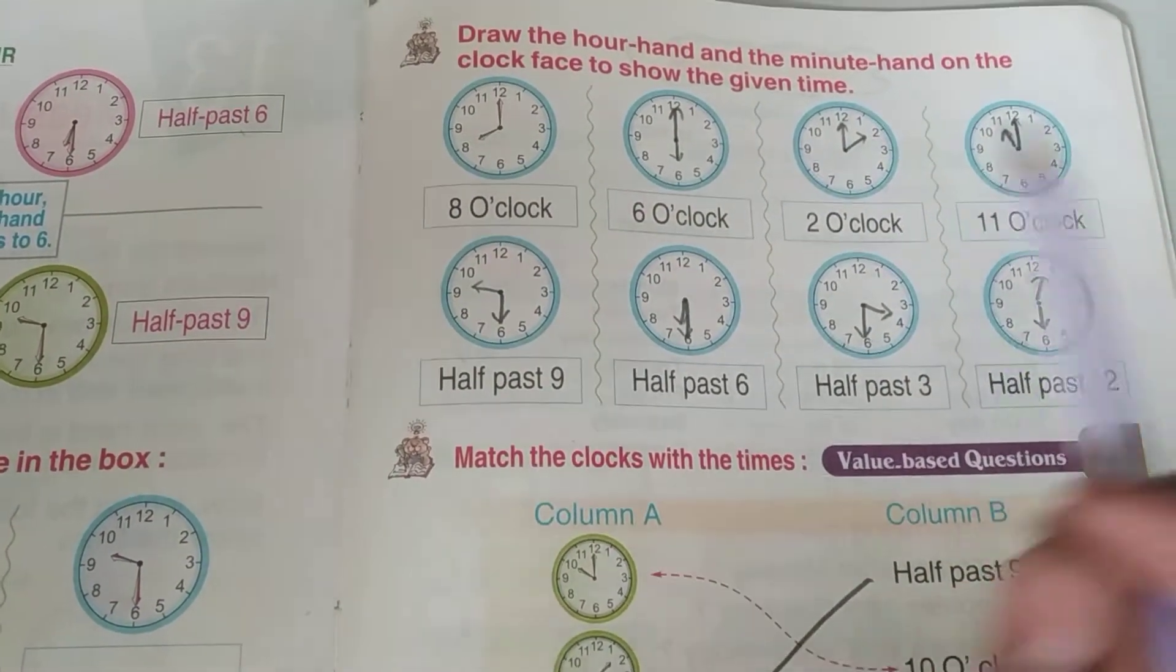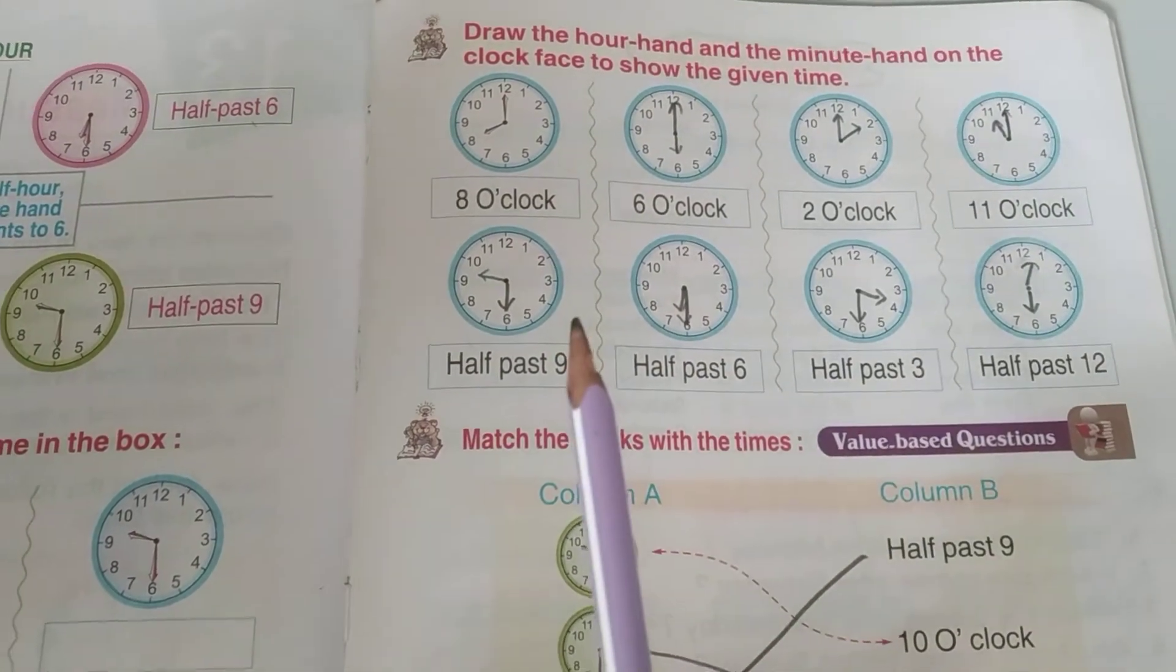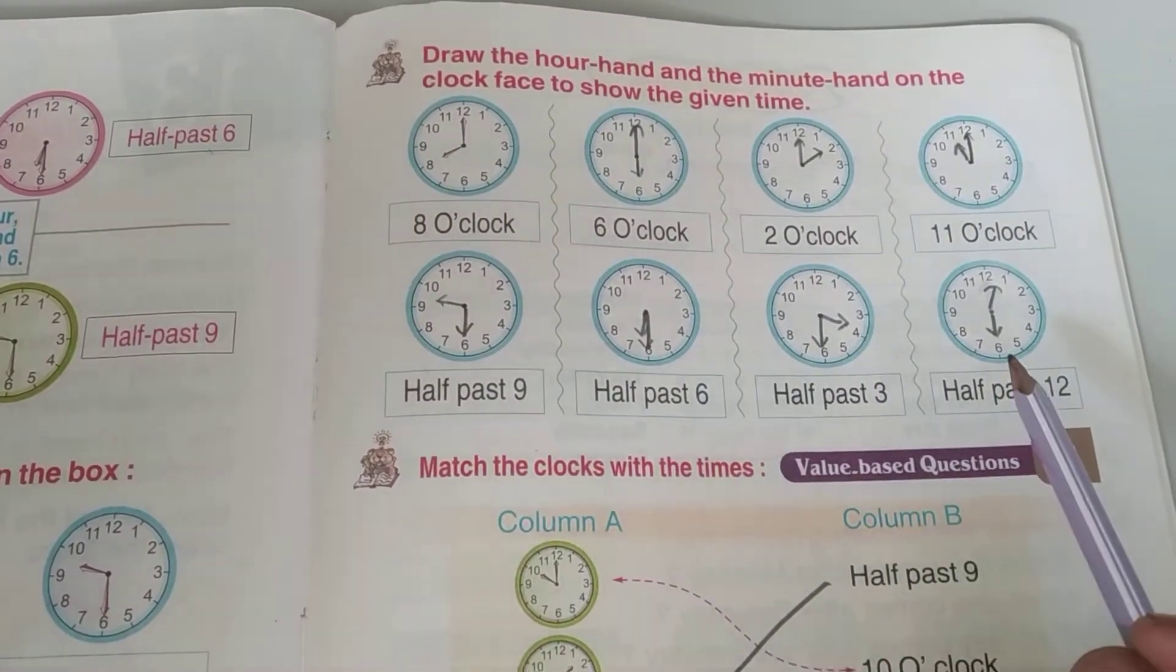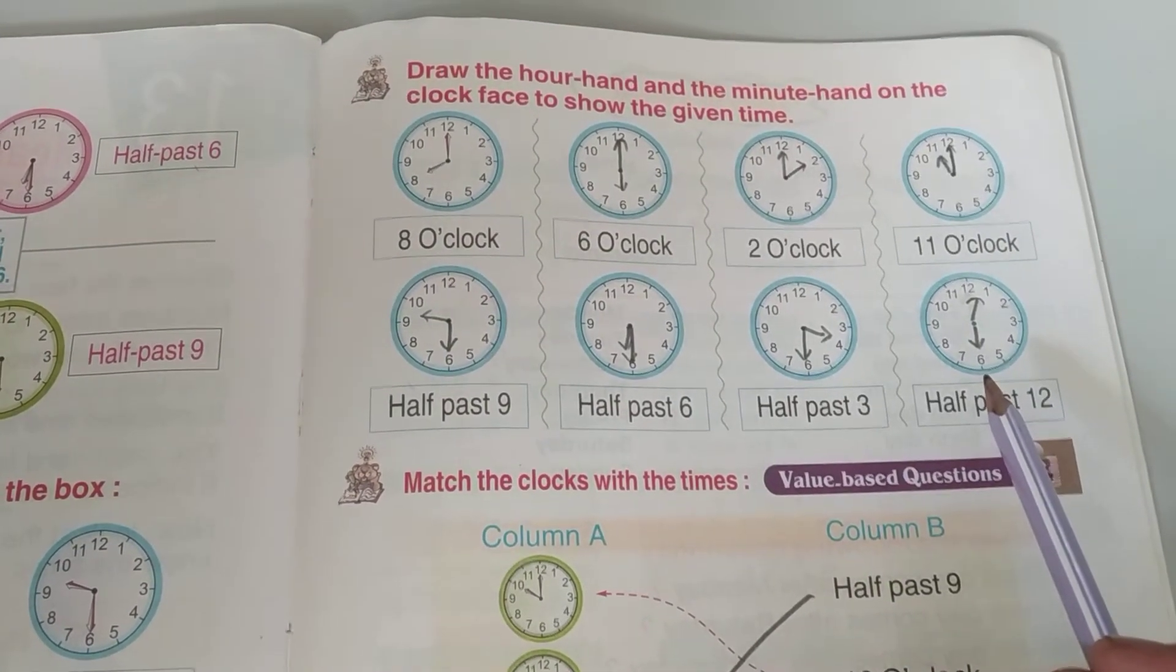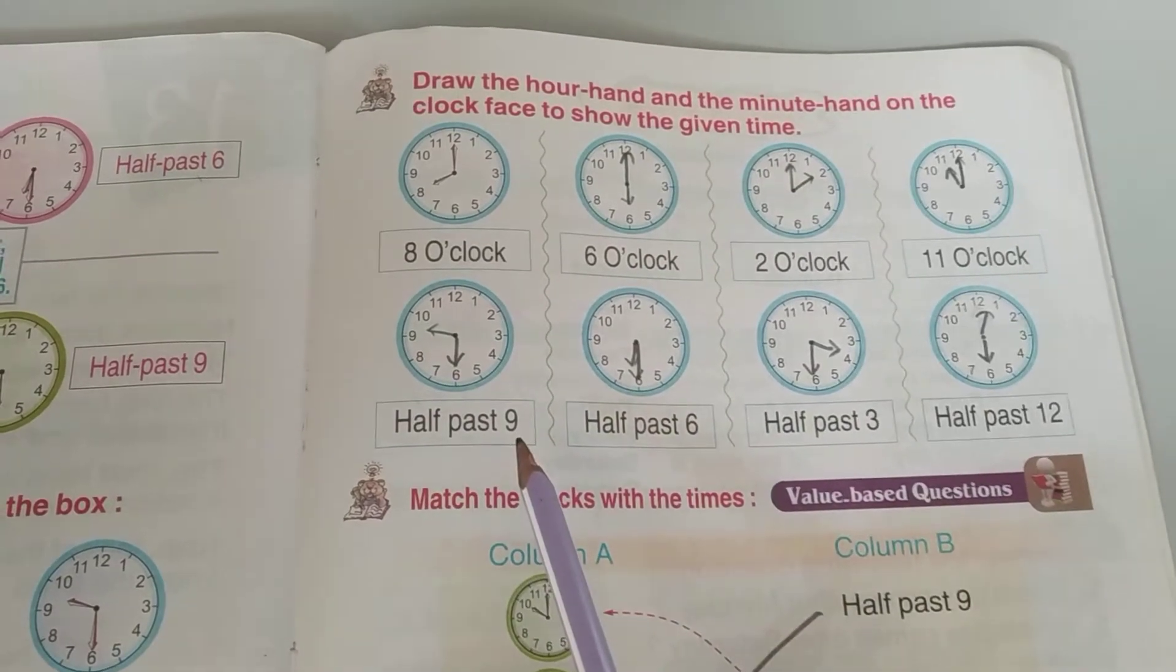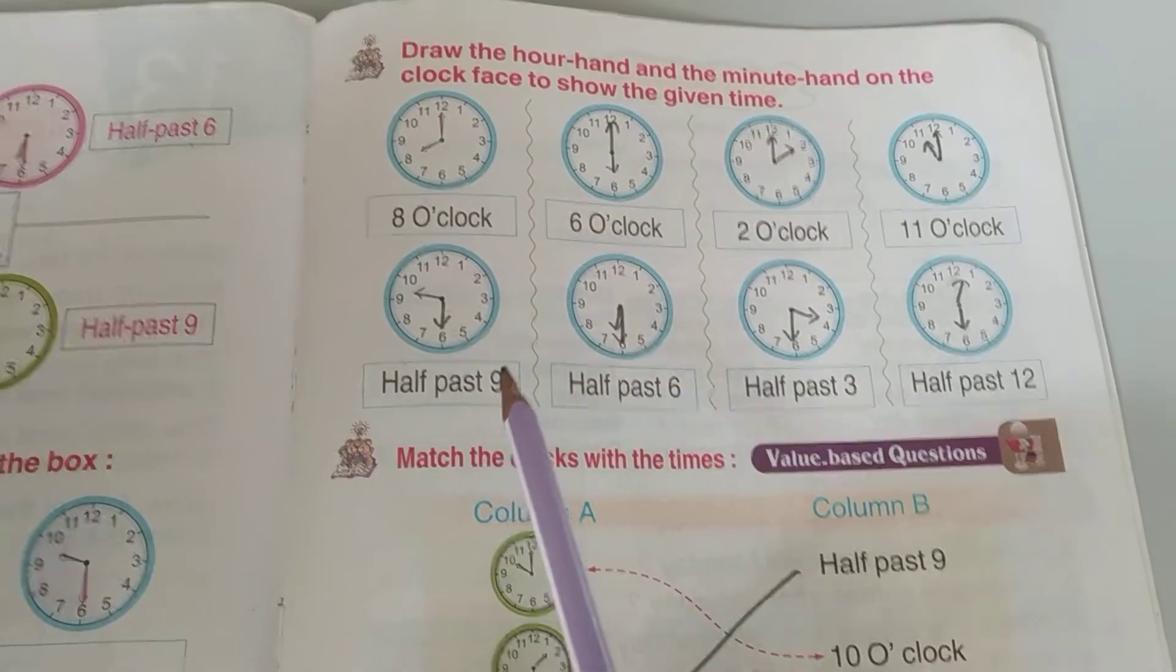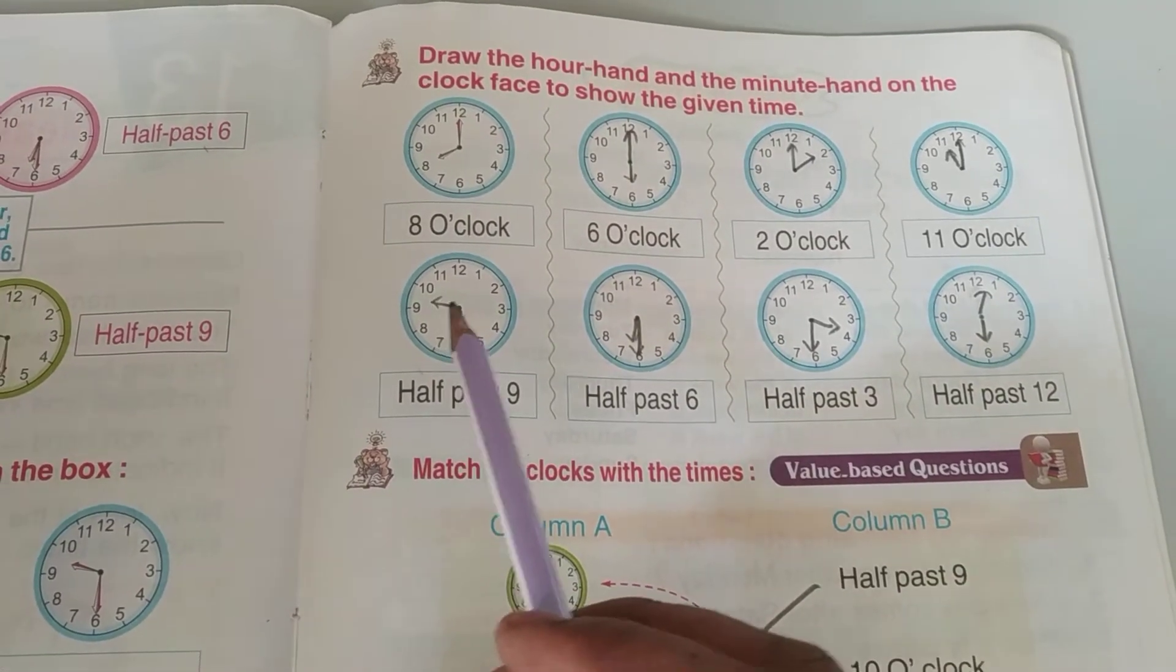Now it is half past 9. When we talk about half past, the minute hand will always be on 6. Now for the hour hand, I told you that when we talk about half past, the hour hand will come between the two numbers. Half past 9 means 9 and the next is 10, so the hour hand comes between 9 and 10.